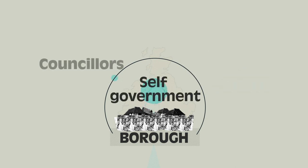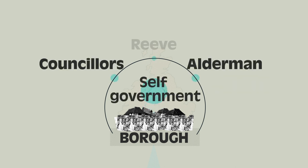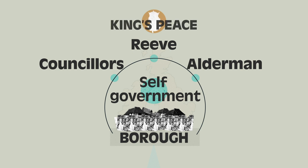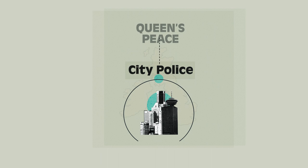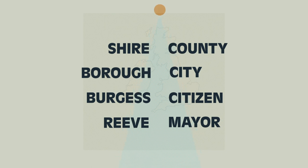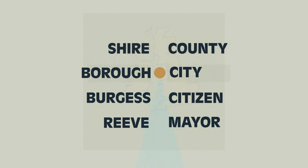Boroughs had councillors, aldermen, and a reeve who kept the king's peace. Our city police reflect this tradition — not an arm of government as in the US; they maintain the king's or queen's peace, meaning subjects are free to live their lives without harassment. For hundreds of years, England's government was conducted in French: shire became county, borough became city, burgess became citizen, reeve became mayor.